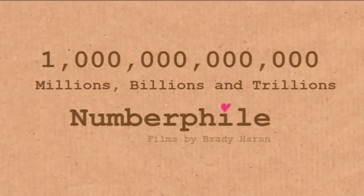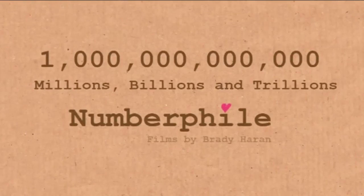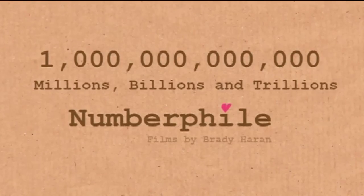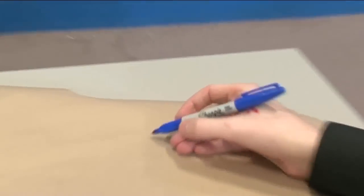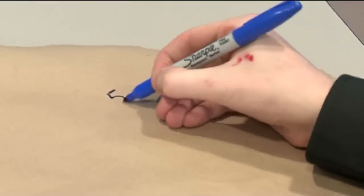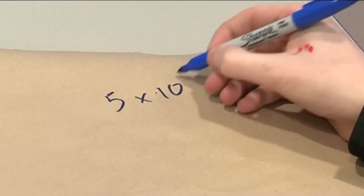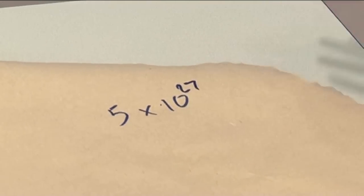Let's be honest. Real mathematicians and real scientists, if they've got a large number, they're not really going to use billions and trillions. They actually use standard form. So if I want to say something with 27 zeros, you'd write something like 5 times 10 to the 27.